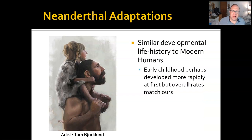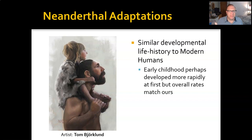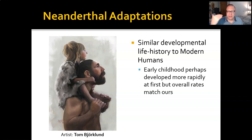Their developmental and life histories are very similar to modern humans. They would have reached adolescence at about the same time, adulthood at about the same time, and would have lived about the same length of time. Early childhood seems a little different — they appear to develop more rapidly very early on — but by the age of four or five, human children catch up. So it's not that different.